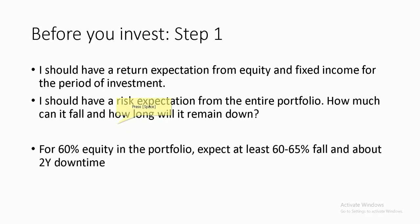But how do you decide? The first step is to have a return expectation from equity and fixed income for the period you're going to invest. The return expectation will depend on the investment period. Then you should have a risk expectation — how much should you expect your portfolio to move up and down, and how long will it remain down if it falls? For example, with 60% equity you should expect at least a 60–65% fall in the entire portfolio, and it may remain down for as long as two years. For 40% equity expect a 50% fall; for 70% equity expect a 75–80% fall. Higher equity means higher risk, and higher risk does not always mean higher return.